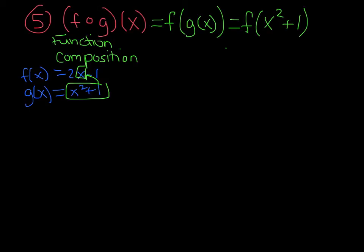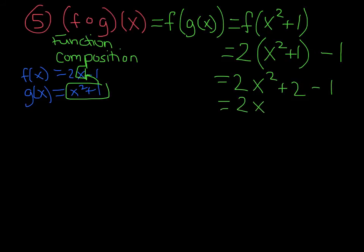Now, you're going to take your f(x), which is 2x - 1, substitute this x² + 1 in for your x. So you end up getting it looking like this. Your final answer here will be 2x² + 1.